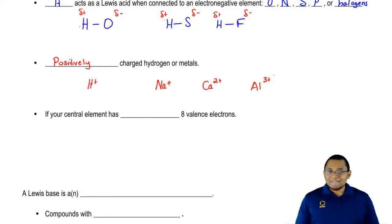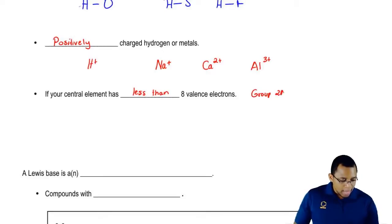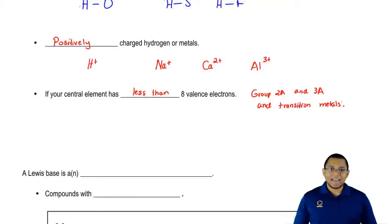The last and final type of Lewis acid is anytime your central element has less than 8 valence electrons around it. Remember, this is the octet rule. Our central element wants to have 8 electrons so they could have a similar configuration as the noble gases. Group 2A and 3A elements and transition metals, when they're in the center, tend to have less than 8 valence electrons.